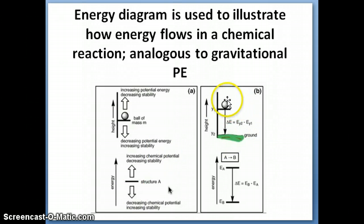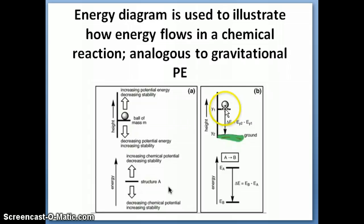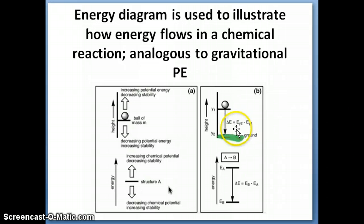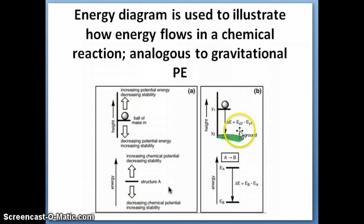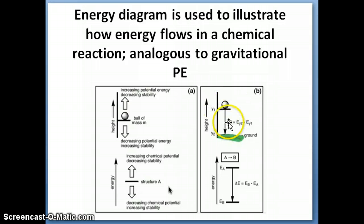Let's say a ball starts from height y1 and falls to height y2. The change in internal energy is delta E, which equals final E minus initial E — in this case, E(y2) minus E(y1). Because the energy at y2 is lower than at y1, subtracting gives a negative number. A negative delta E means energy is released by the ball, which makes sense: when a ball falls, it releases potential energy.